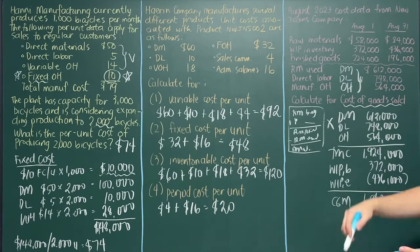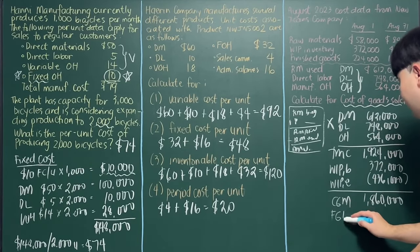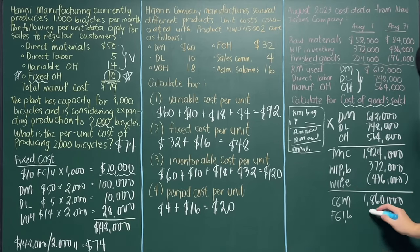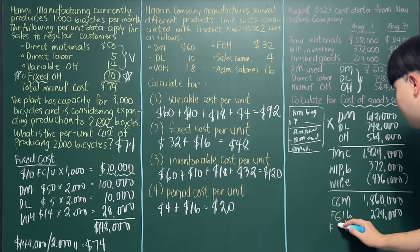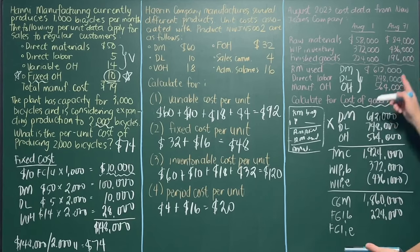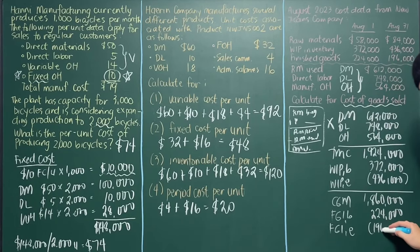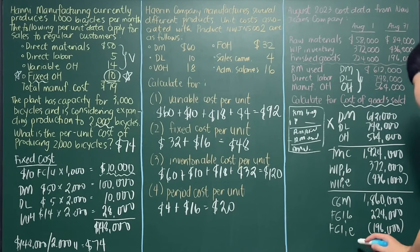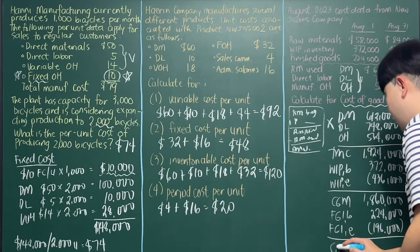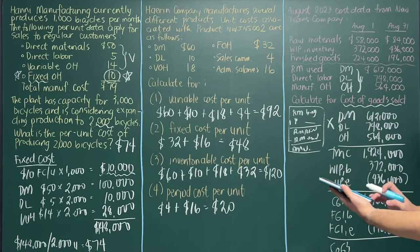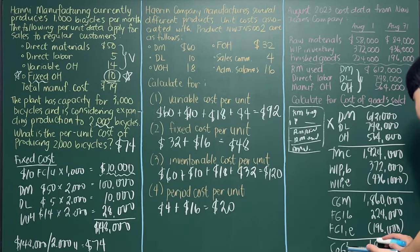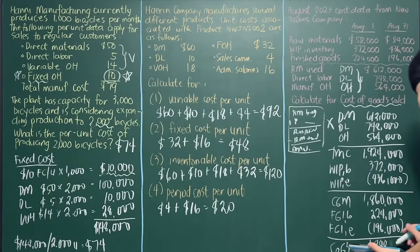Do the same for finished goods. Finished goods inventory beginning is $224,000, and finished goods inventory ending is $196,000. Cost of goods sold = $1,860,000 + $224,000 − $196,000 = $1,888,000.